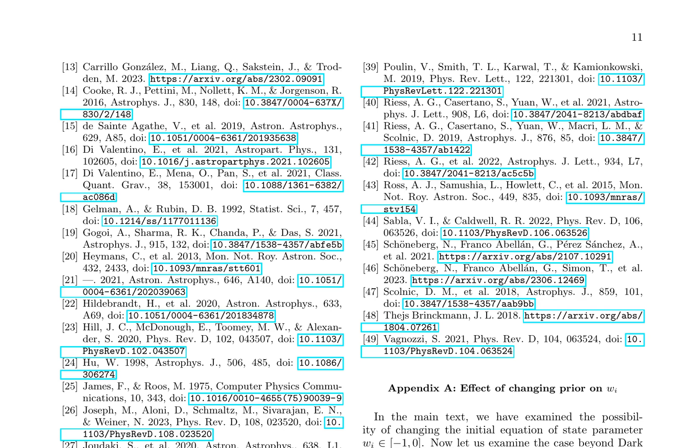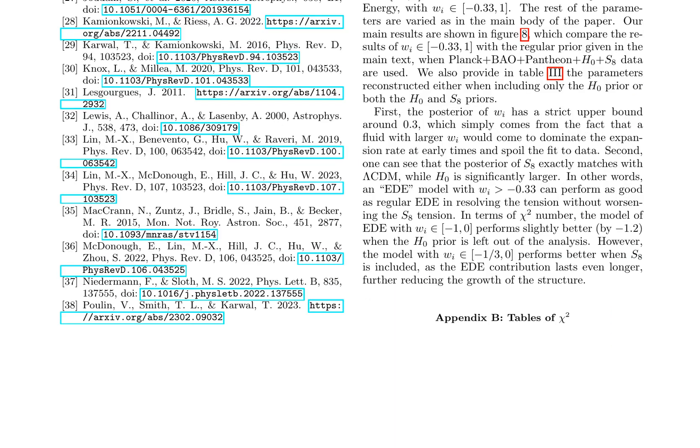In the context of dark energy models, the initial equation of state parameter WI is typically assumed to fall within a standard range. However, this study explores the possibility of varying WI beyond its conventional bounds, examining the implications for model performance. Specifically, the analysis considers WI values ranging from negative 0.33 to negative 1, comparing the results to the standard prior. The outcomes are presented in Figure 8, which illustrates that models with WI greater than negative 0.33 can achieve performances comparable to standard dark energy models. Notably, these alternative models can resolve the H0 tension without exacerbating the S8 tension. The chi-squared values for different models are provided in the appendix, offering a detailed assessment of the model fits. This investigation demonstrates that relaxing the standard constraints on WI can lead to viable dark energy models that reconcile the H0 and S8 tensions, thereby providing new insights into the nature of dark energy.